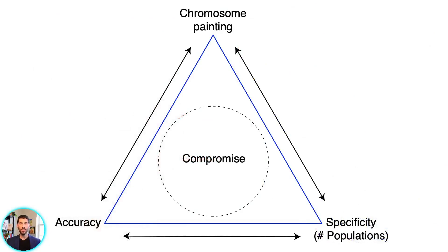Now let's dive into the purpose and goals of MyOrigins 3. There's a trade-off between accuracy and the number of populations, or specificity. If you include more populations, each has more genetic overlap with neighboring populations, which lowers accuracy. To include a chromosome painting, there's another trade-off: predicting the ancestry of each small DNA segment is called local ancestry inference, and it requires that small DNA segments are distinct enough to identify which population they came from. If they're not very distinct, the chromosome painting will lower accuracy and specificity. Our goal was to find the sweet spot — the compromise in the middle.